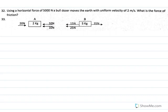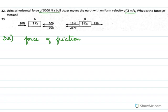Using a horizontal force of 5000 Newtons, a bulldozer moves earth with a uniform velocity of 2 m/s — what is the force of friction? Since the bulldozer moves forward, the force of friction is a little less than 5000 Newtons. That is why it is able to move forward.